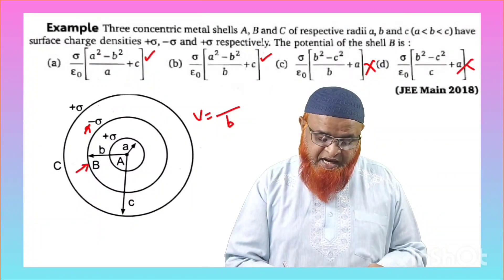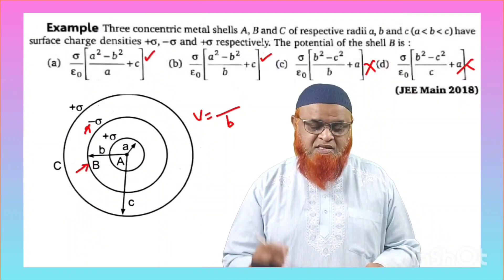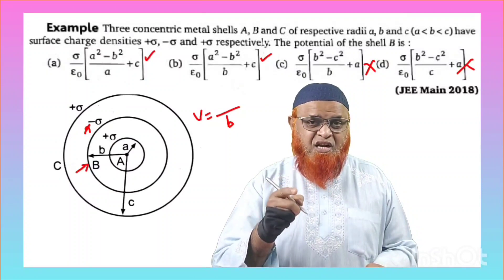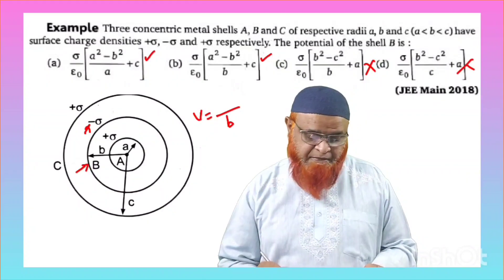Second shell means denominator should be B here because as you are considering second shell, you have to take denominator the radius of the second shell.